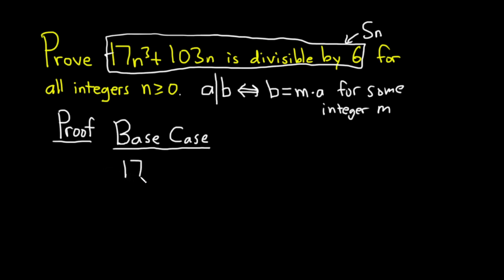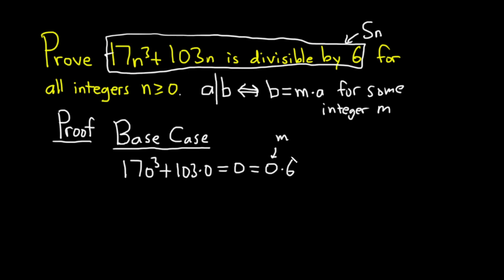When n is 0, we have 17 times 0 cubed plus 103 times 0, and that's equal to 0. The question is: is this a multiple of 6? It is, because you can write this as 0 times 6 — so it equals an integer m times a, where m is 0 and a is 6. So it's a multiple of 6, which means S sub 0 is true.